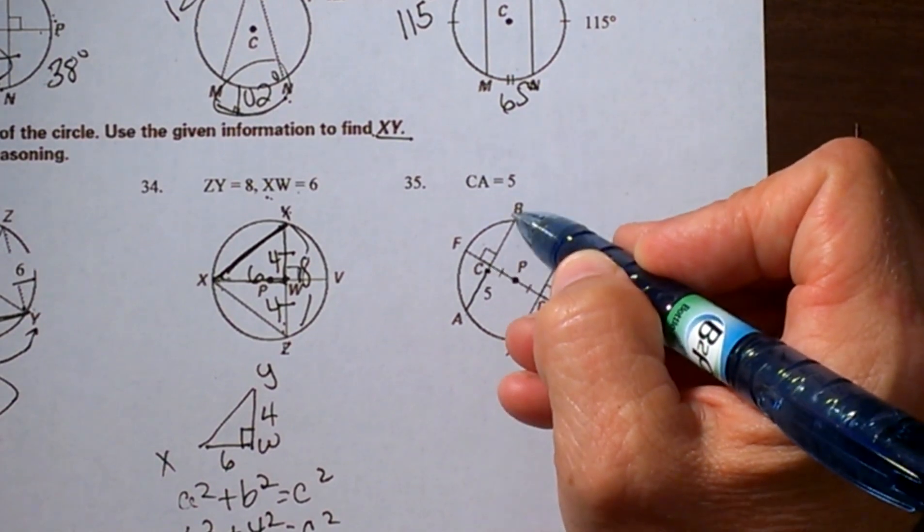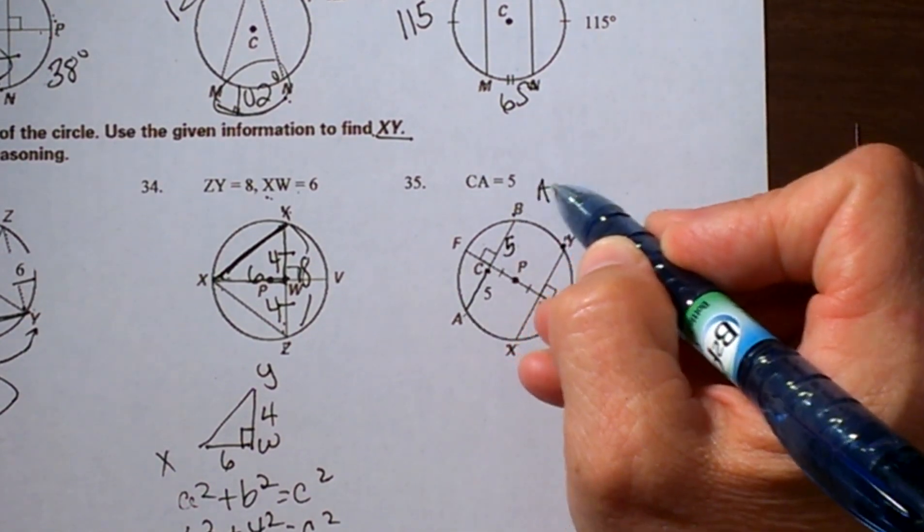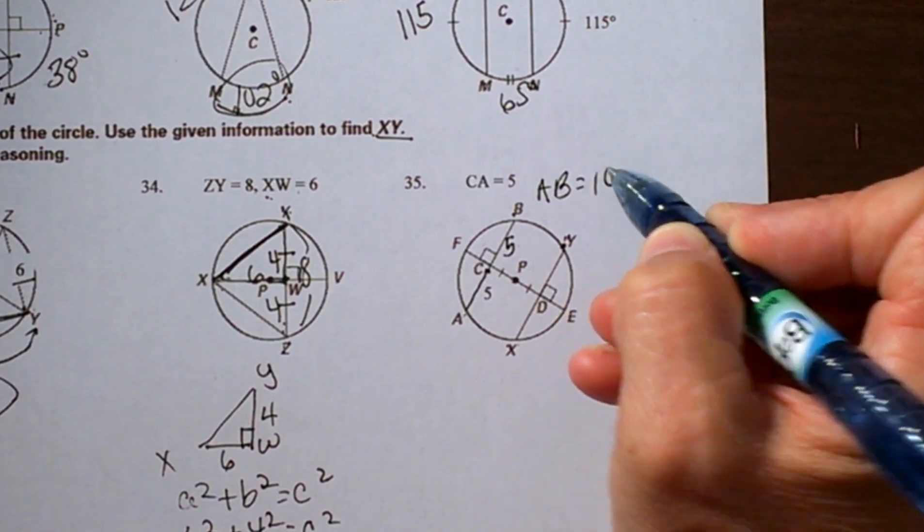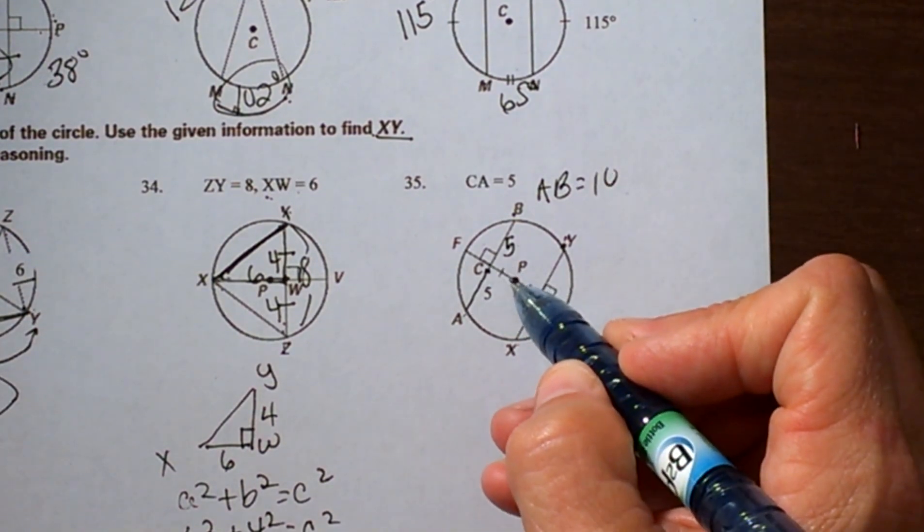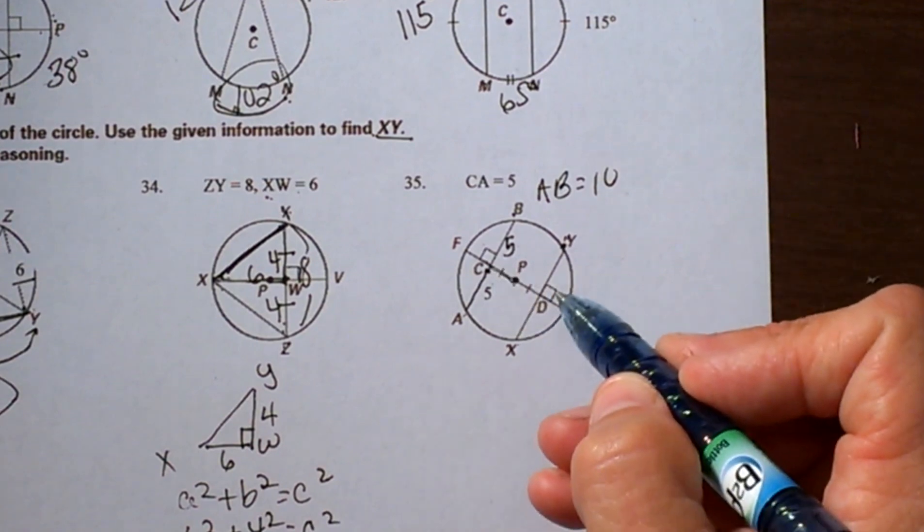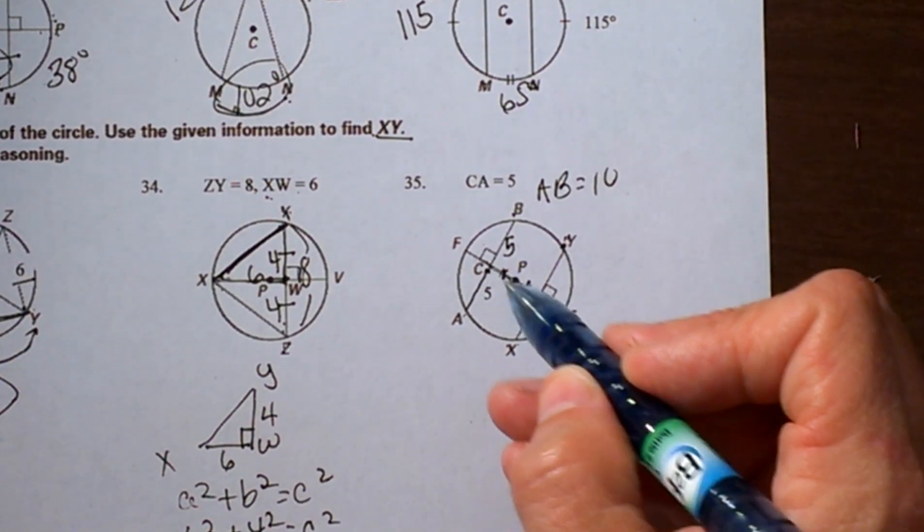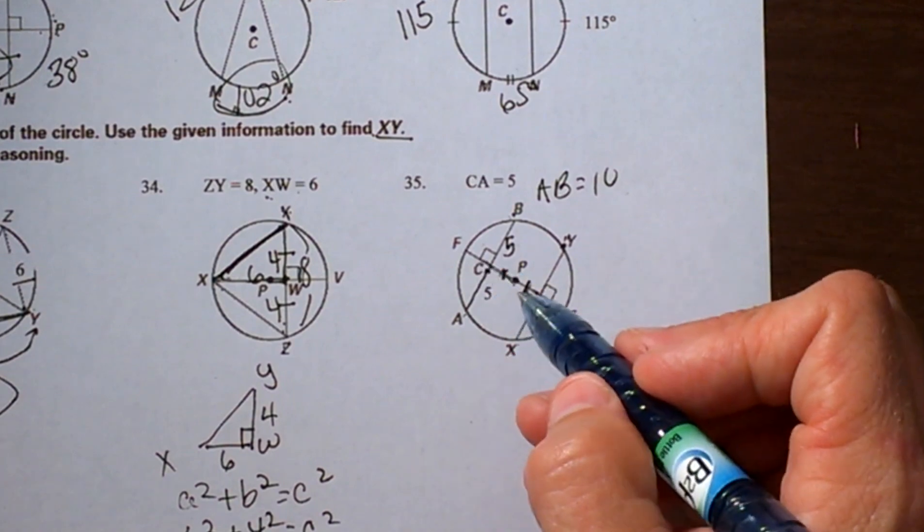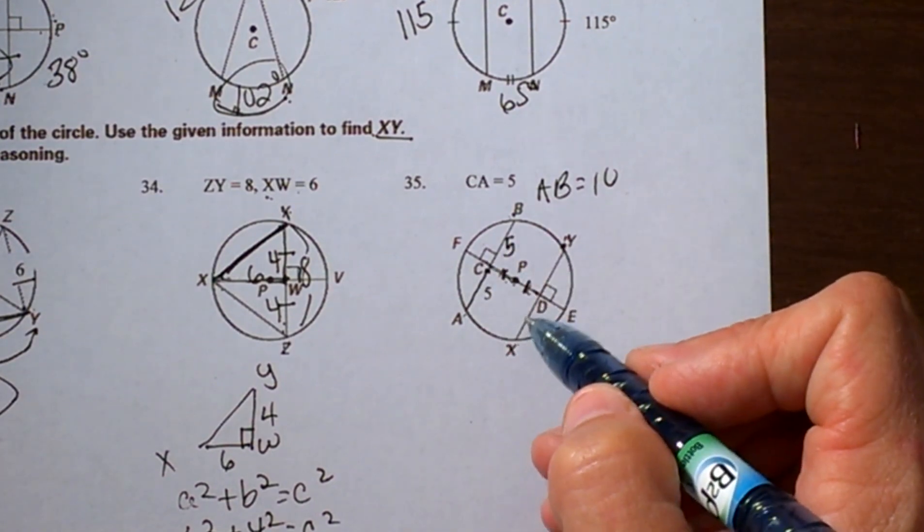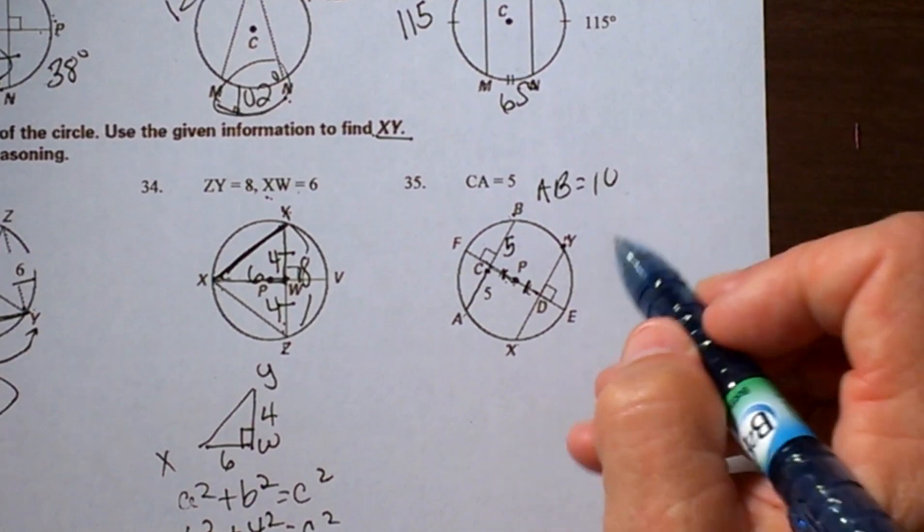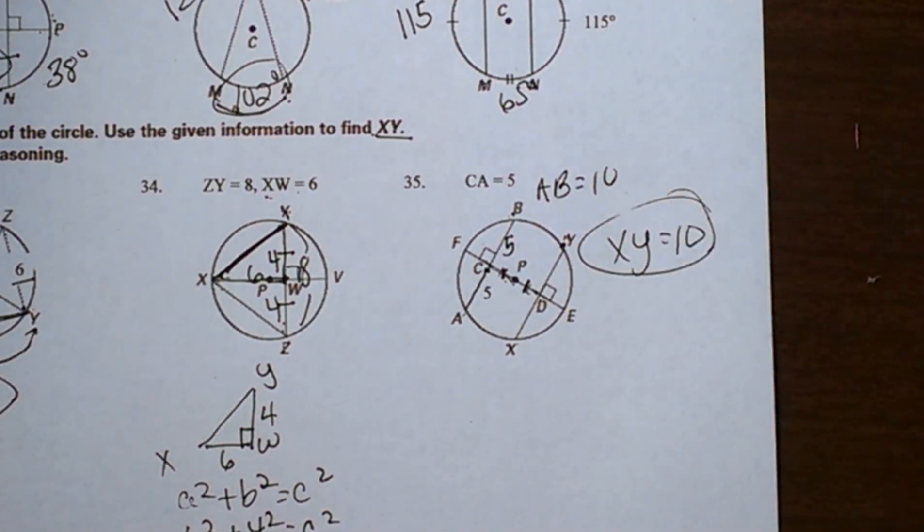Now notice that P to C, this distance, is congruent to P to D, this distance. Well, there's a theorem that says two chords in the same circle that are equidistant from the center must also be congruent. So that means XY is also 10, and that's how you find that answer.